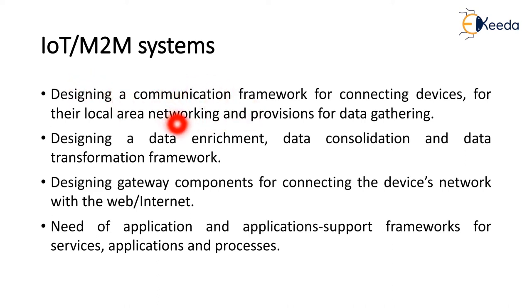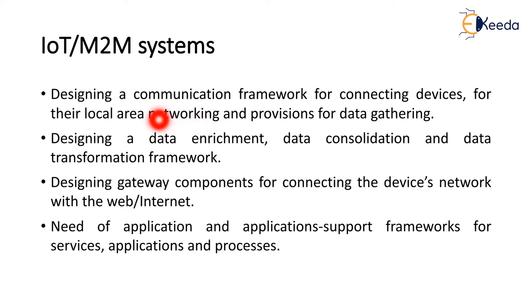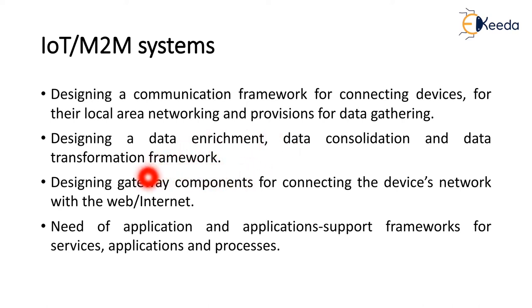These system standards give an idea about designing a communication framework for connecting devices — how devices are connected, what protocols they follow, and provisions for local area network working and data gathering. What type of data is gathered, what network protocol is used for connection — these are the parts that deal with IoT standardization. This includes designing a data enrichment, data consolidation, and data transformation framework, as well as designing gateway components. Once data is collected, it is transferred to the network through a gateway, and devices are also connected to other devices through the internet, so the gateway acts as a mediator.